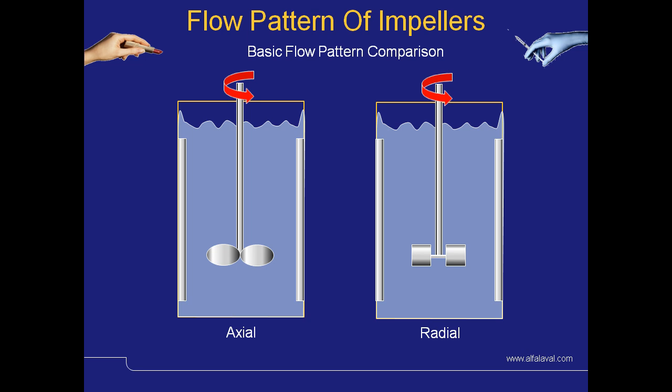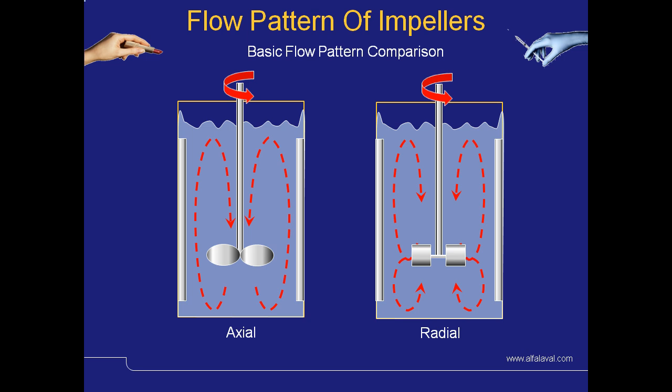Here again you can see the basic comparison between the axial flow and the radial flow impeller. We have not shown the pattern for close tolerance impellers — these are inherently wipers, concentrating most of their effort on removing products from the side of the tank.